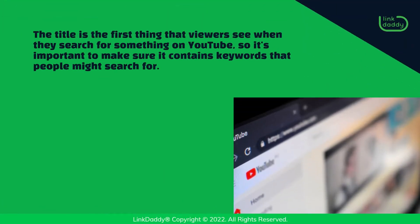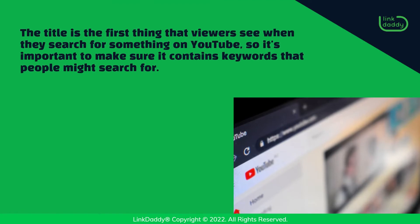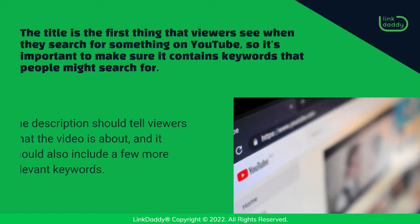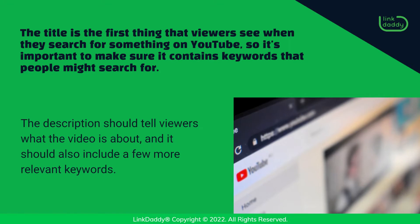The title is the first thing that viewers see when they search for something on YouTube, so it's important to make sure it contains keywords that people might search for. The description should tell viewers what the video is about, and it should also include a few more relevant keywords.